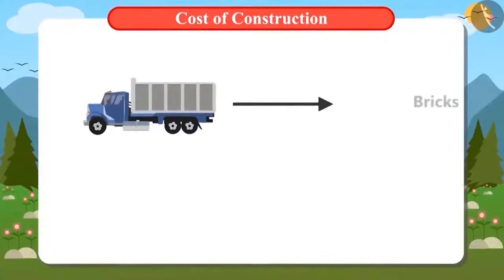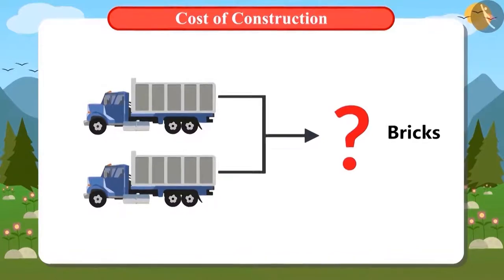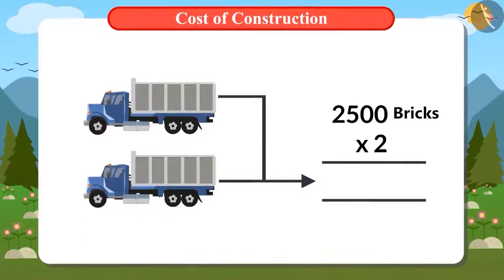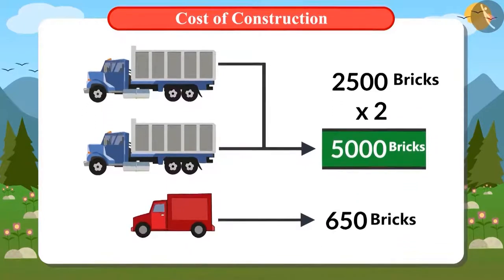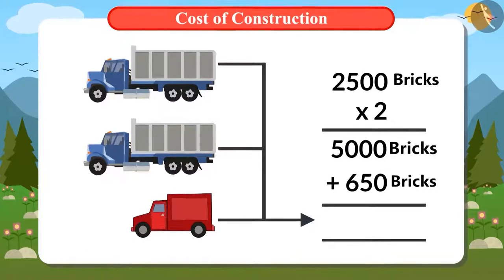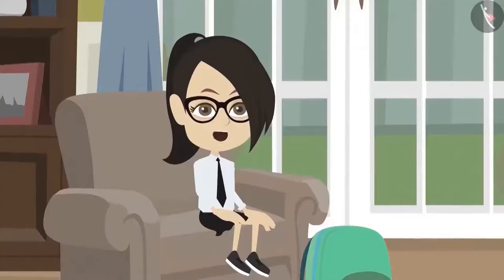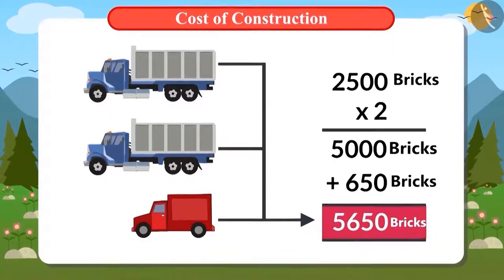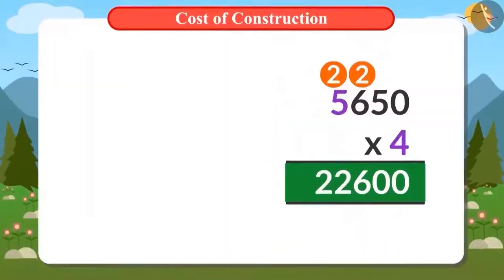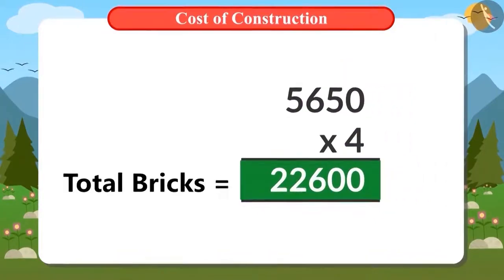Vandana works out the calculation. 2,500 bricks come in a big truck, so 2 big trucks bring 5,000 bricks. A small truck brings 650 bricks. Adding them together gives 5,650 bricks per month. Multiplying 5,650 by 4 gives 22,600, which equals the total number of bricks required. This confirms that 2 big trucks and 1 small truck each month for 4 months delivers the correct amount.